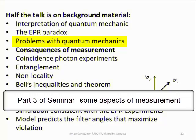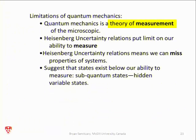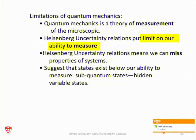There are problems with the foundations of quantum mechanics. What I want to mention is some aspects of measurement. Quantum mechanics is a theory of measurement — that's what we do with it. Whenever you want to measure something, you have to put on a probe; you have to use something to look. If you don't have a probe, you don't see anything. The Heisenberg uncertainty principle puts a limit on what we can measure.